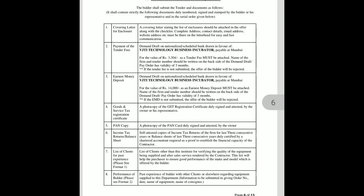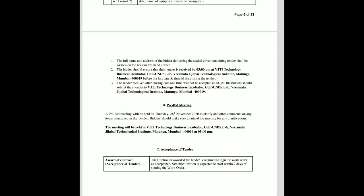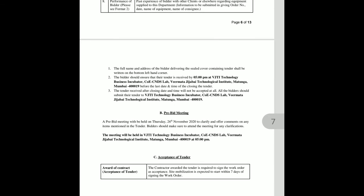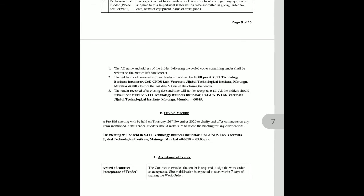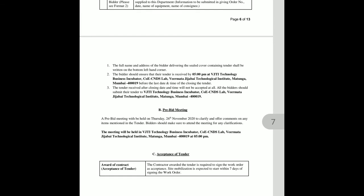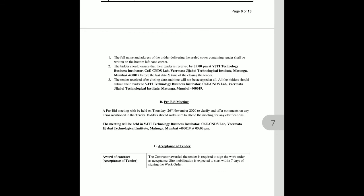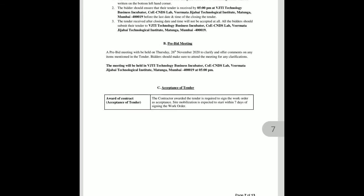All these documents are put in an envelope. The full name and address of the bidder should be written on the bottom left-hand corner of the sealed cover. The bidder should ensure that their tender is received by 5 pm at the given address. Tenders received after the closing date and time will not be accepted. The pre-bidding meeting, which is the opening of the tender, has its time and date mentioned on the certificate.